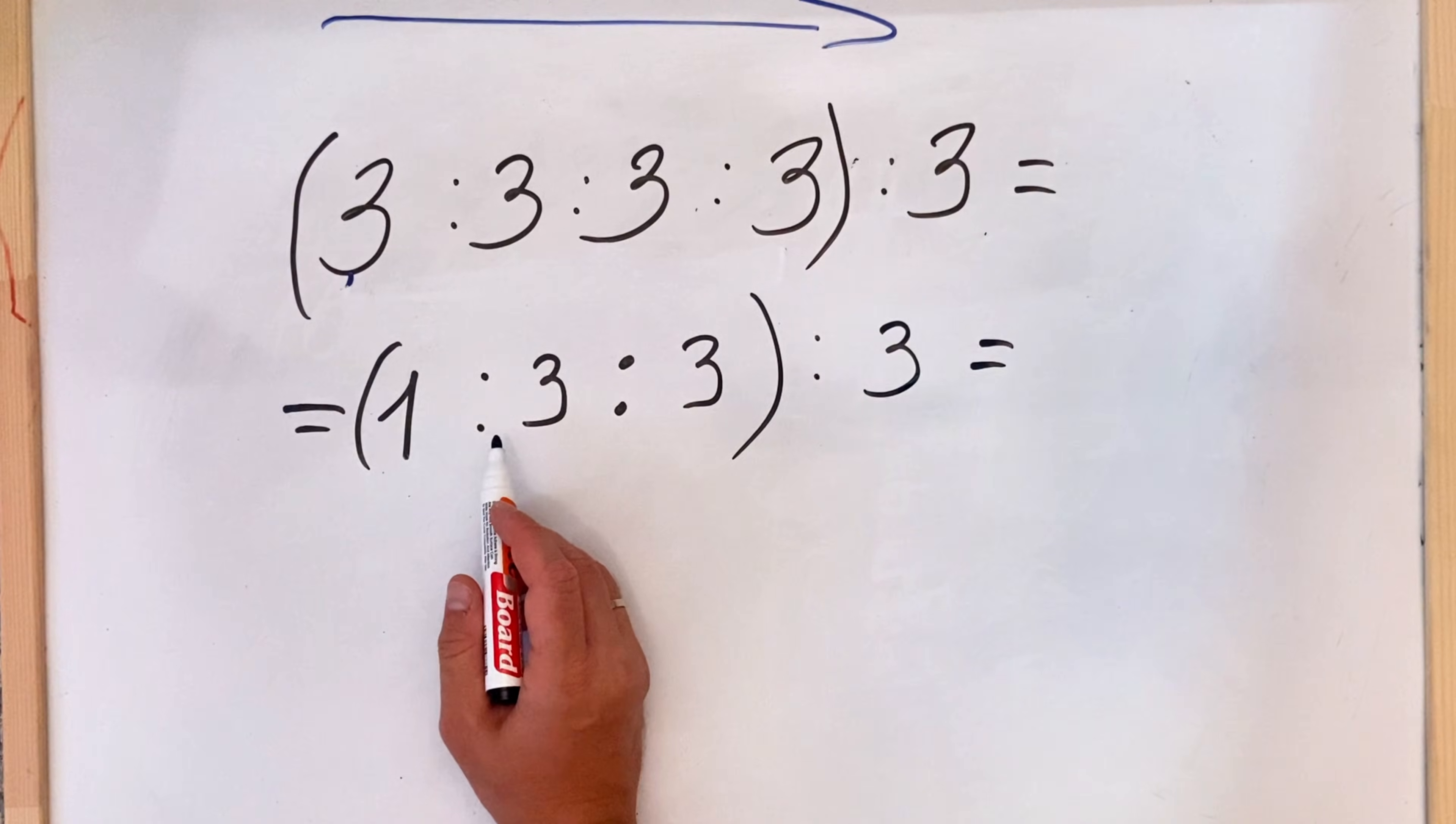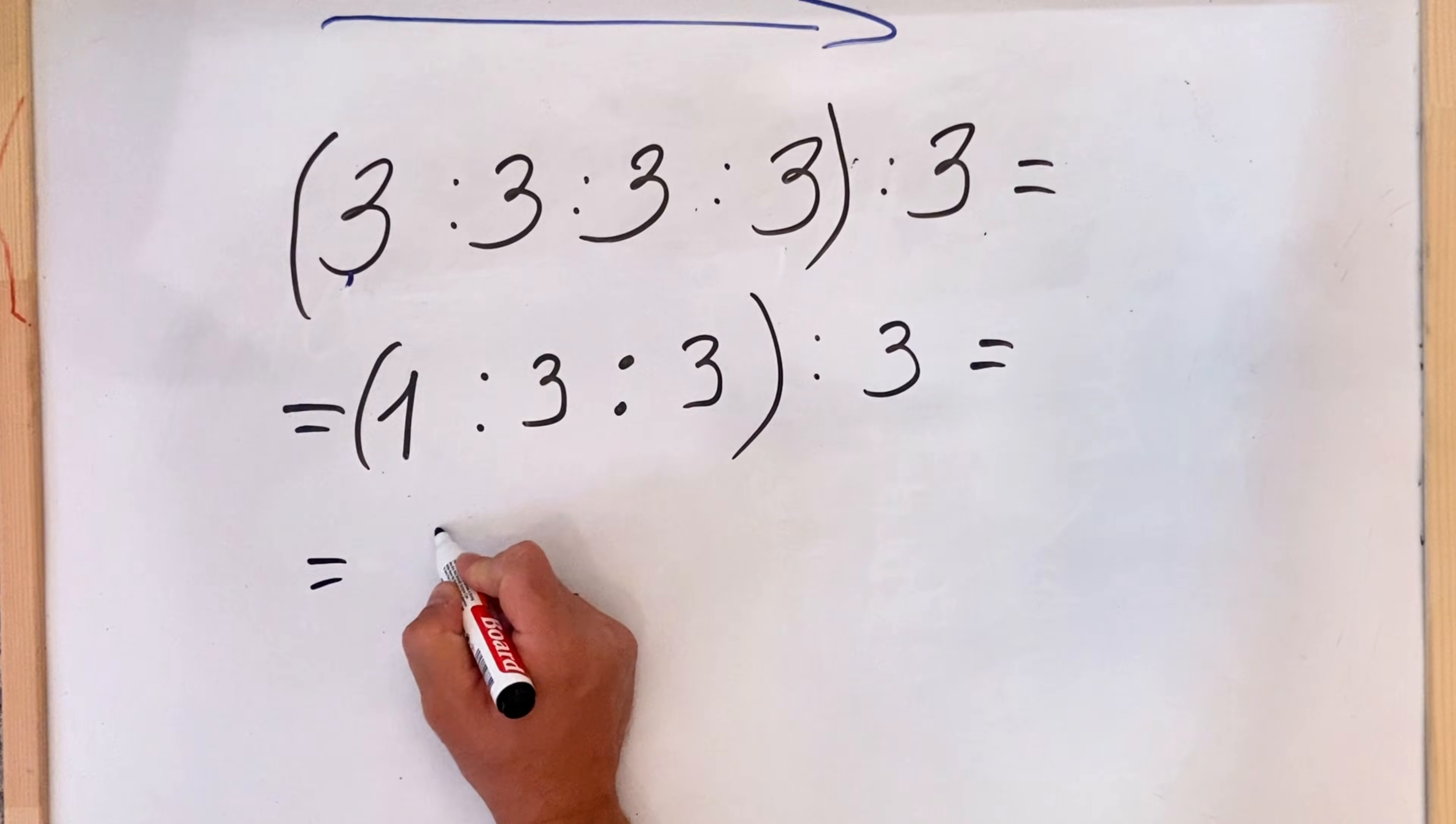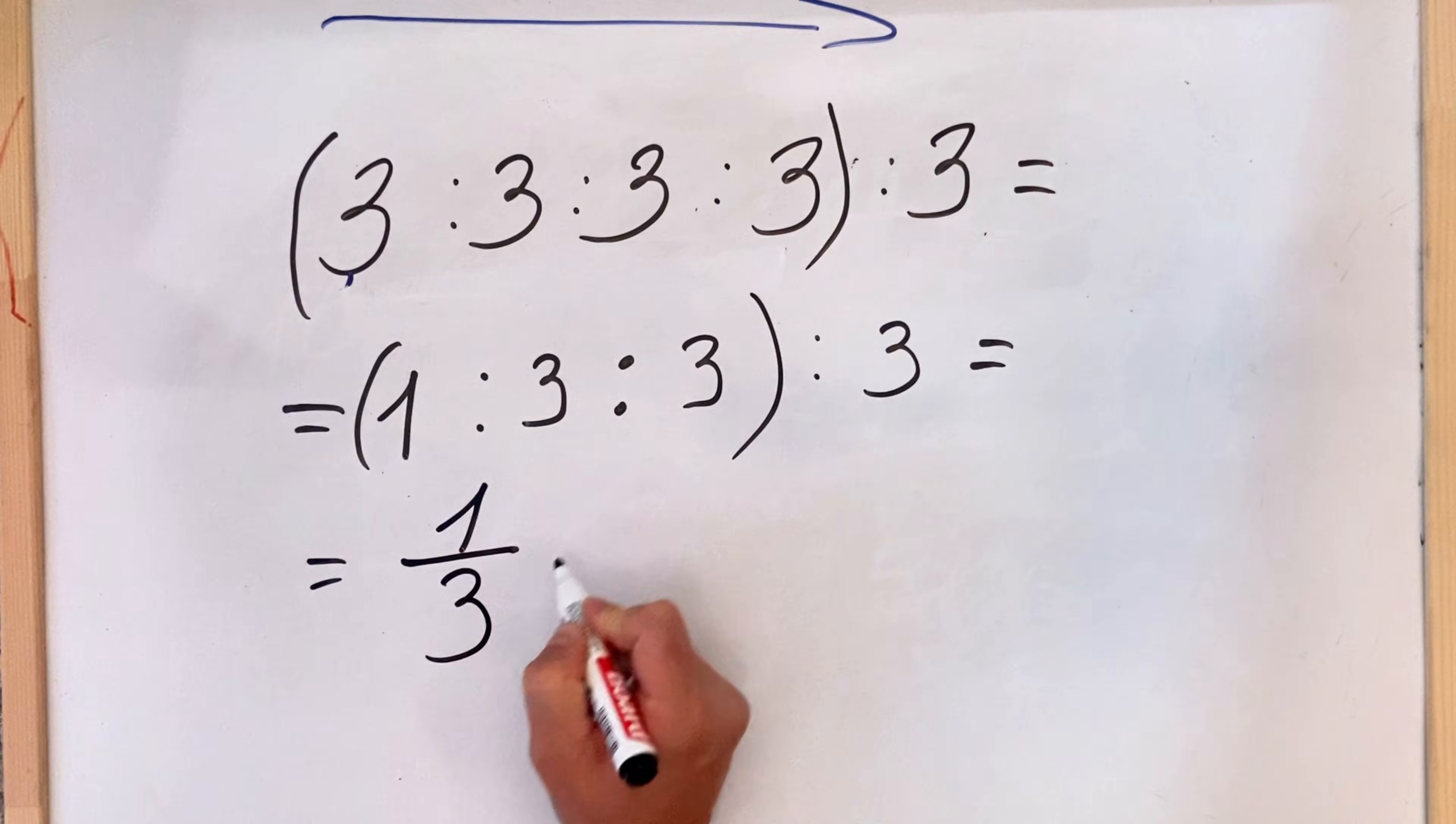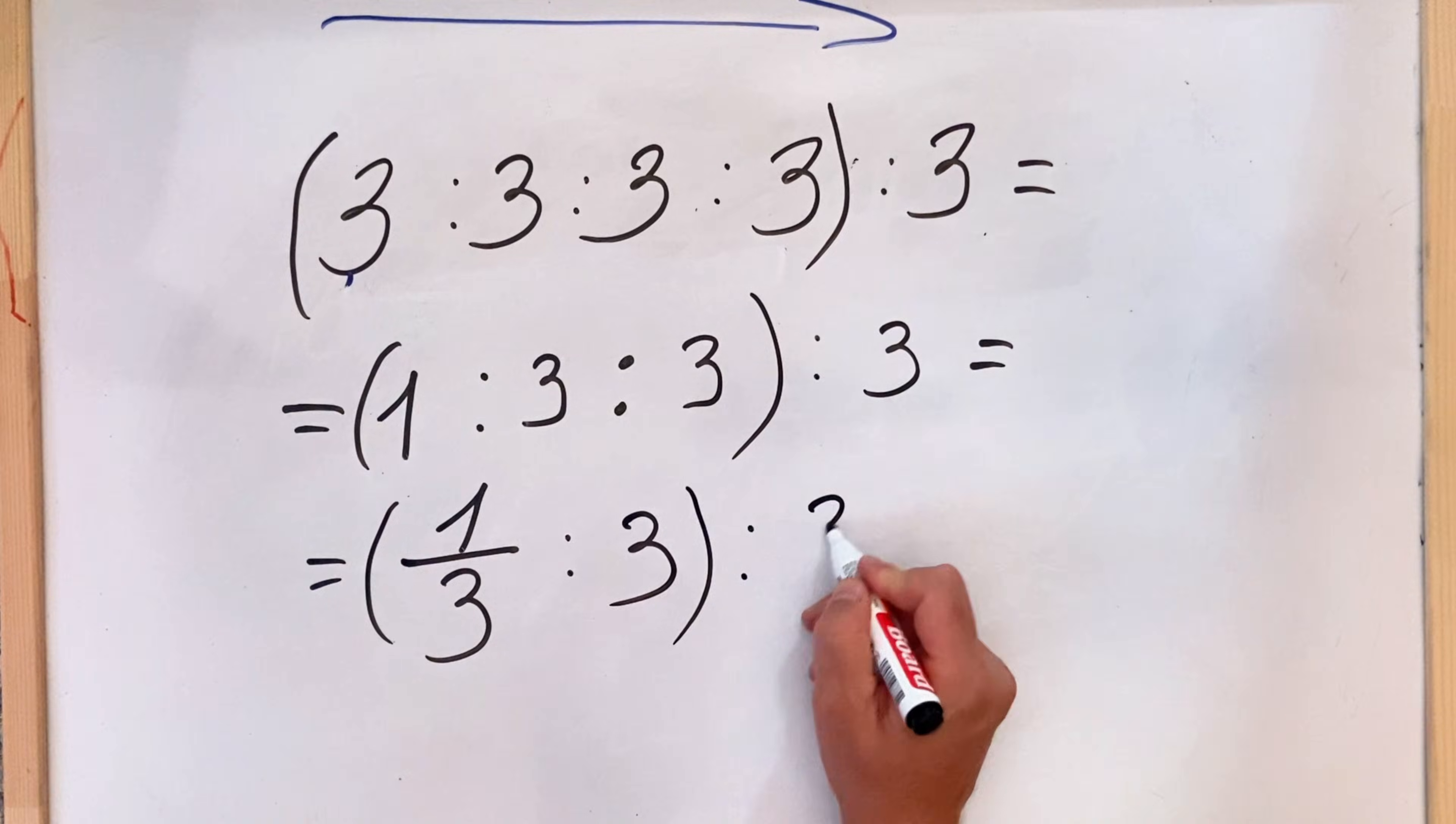So in this case, we have a fraction. So 1 divided by 3 is 1 third, 1 third divided by 3, let's keep it as it is, divided by 3.